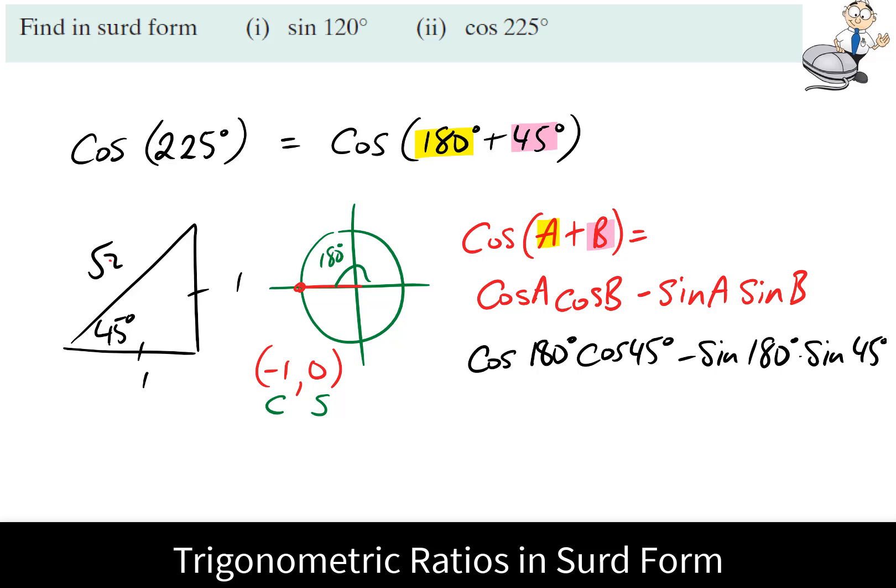We should know the answers for each of these individually in the log tables. We've used a calculator as well. So cos 180 degrees in the unit circle is negative 1, cos 45 is 1 over root 2. We're subtracting this from sine 180, which is 0, so the second part of this is going to be 0.